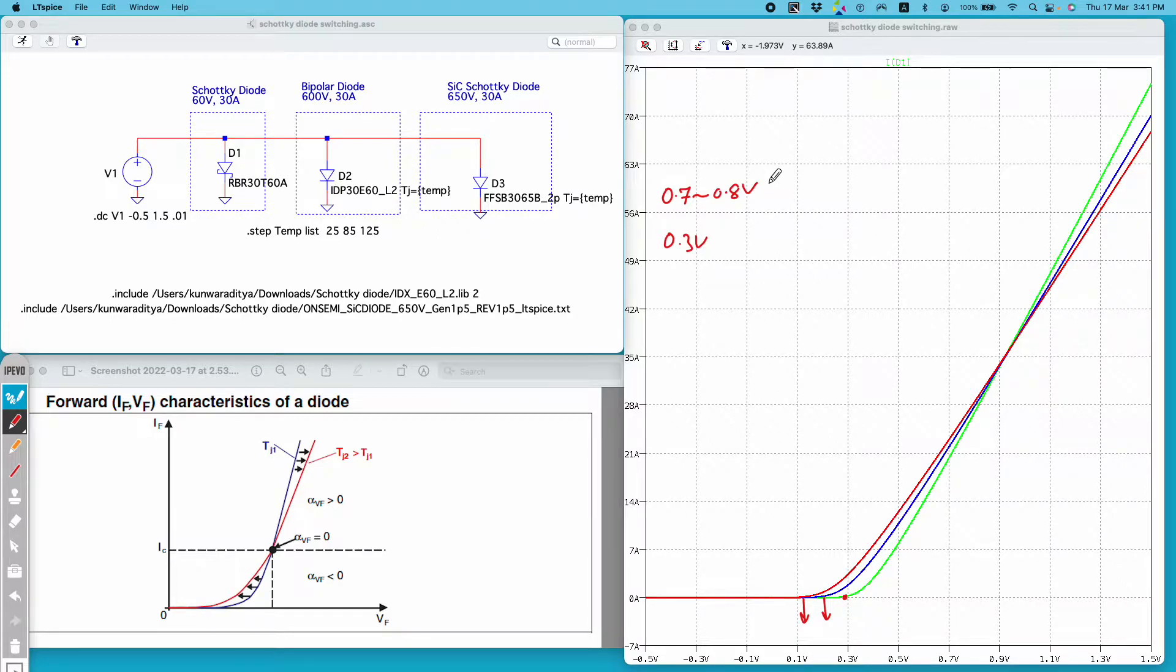Another thing is that they have metal to silicon barrier rather than a PN junction barrier, so they are capable of faster switching compared to bipolar diodes. However one thing is that Schottky diode will be expensive compared to their bipolar counterparts.